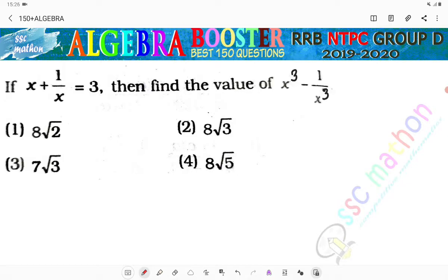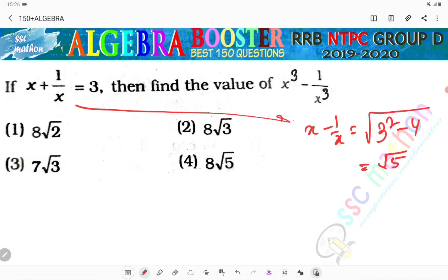Kya hoga? Sir, x minus 1 by x nikalna padega pehle. So x minus 1 by x will be root under 3 square minus 4, that is equals to root 5.